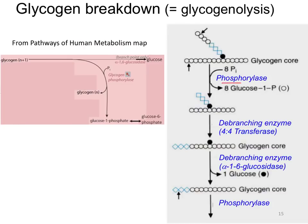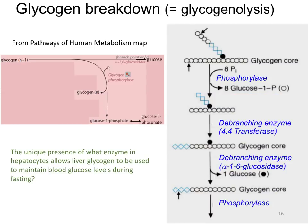Glycogen phosphorylase is the main enzyme involved in glycogen breakdown, and phosphorylated glucose is released. Looking at our metabolic map, glucose-1-phosphate released from glycogen breakdown is isomerized to glucose-6-phosphate, which can then enter glycolysis. The unique presence of glucose-6-phosphatase specifically in hepatocytes allows liver glycogen to not be used for glycolysis, but instead to maintain blood glucose levels during fasting — it hydrolyzes the phosphate off the sixth position of glucose, producing free glucose that can exit through the GLUT2 transporter and enter the bloodstream.